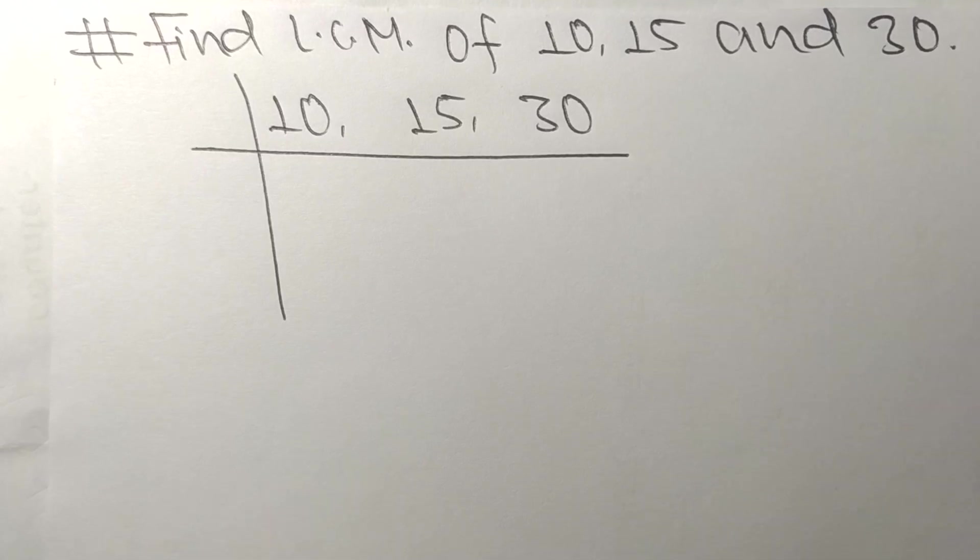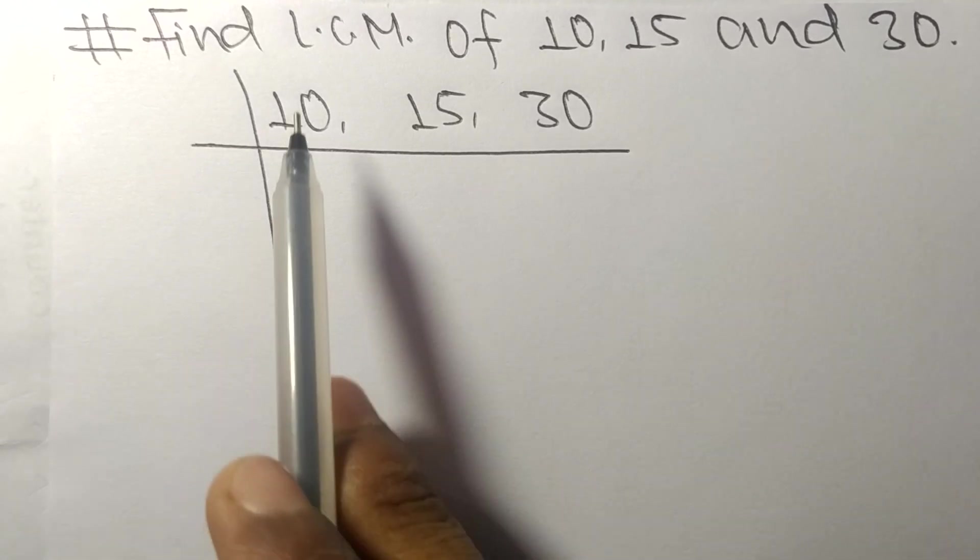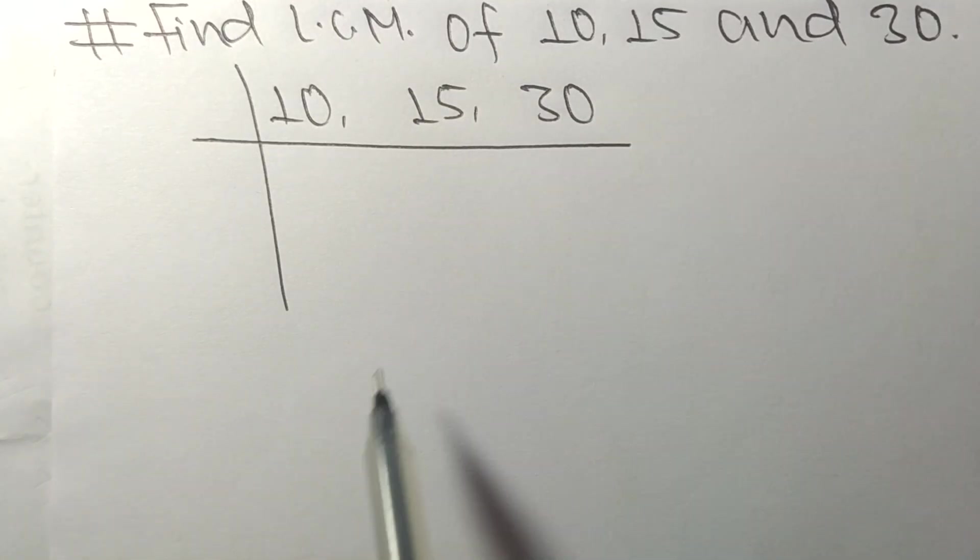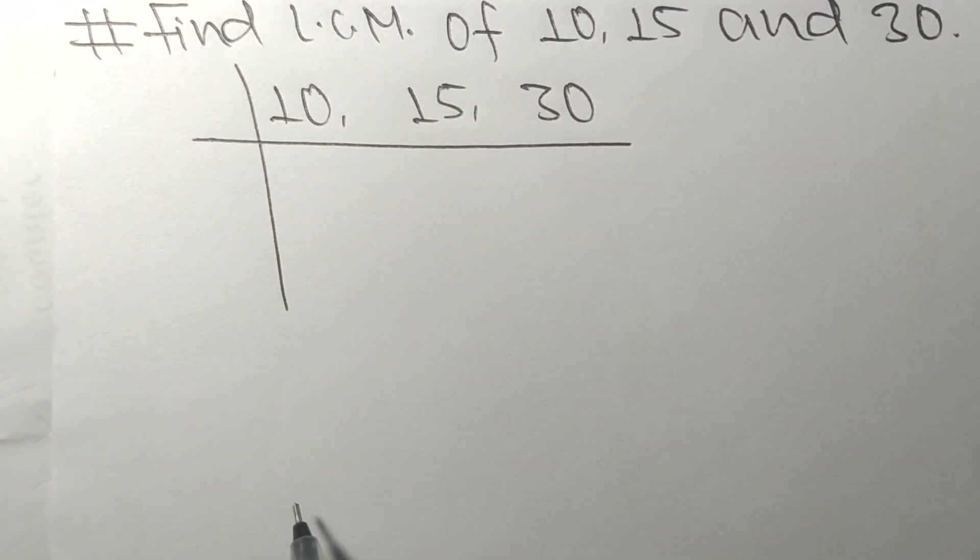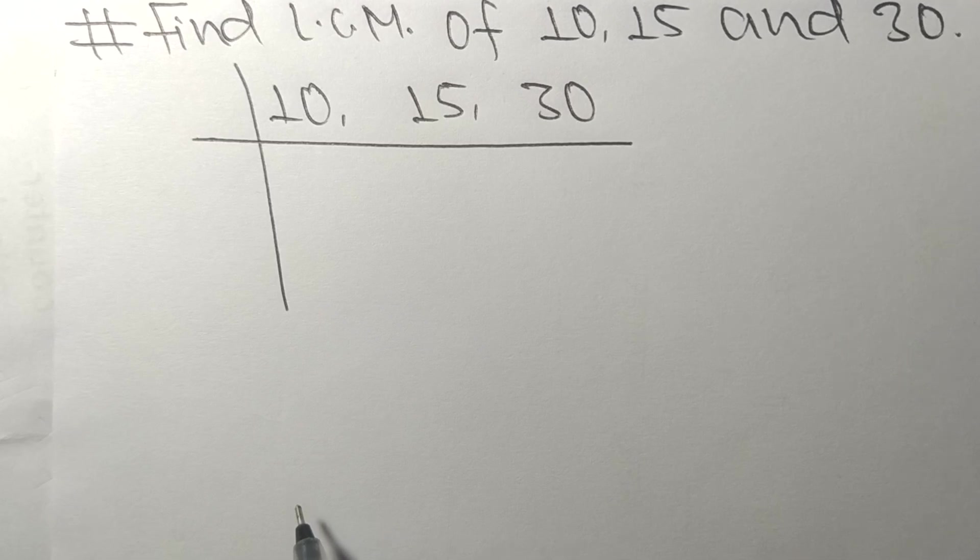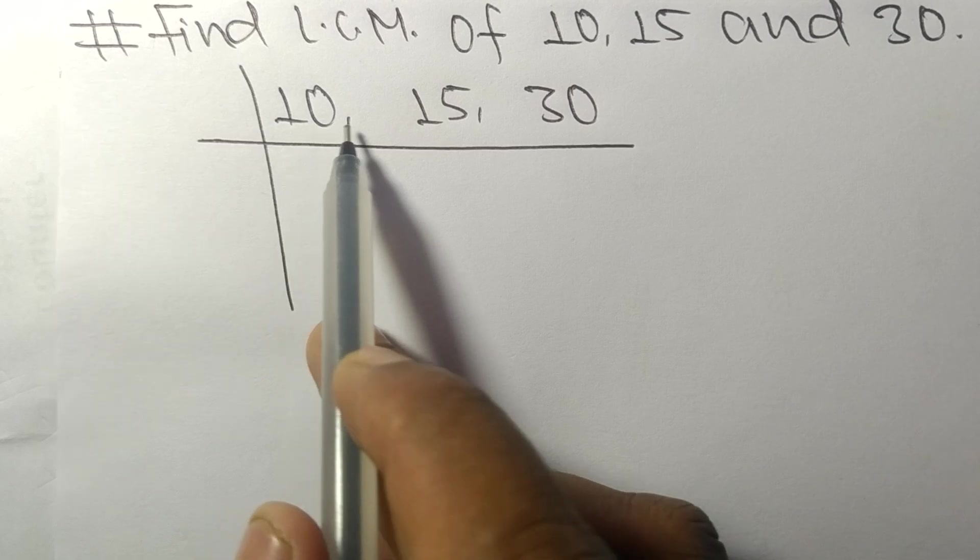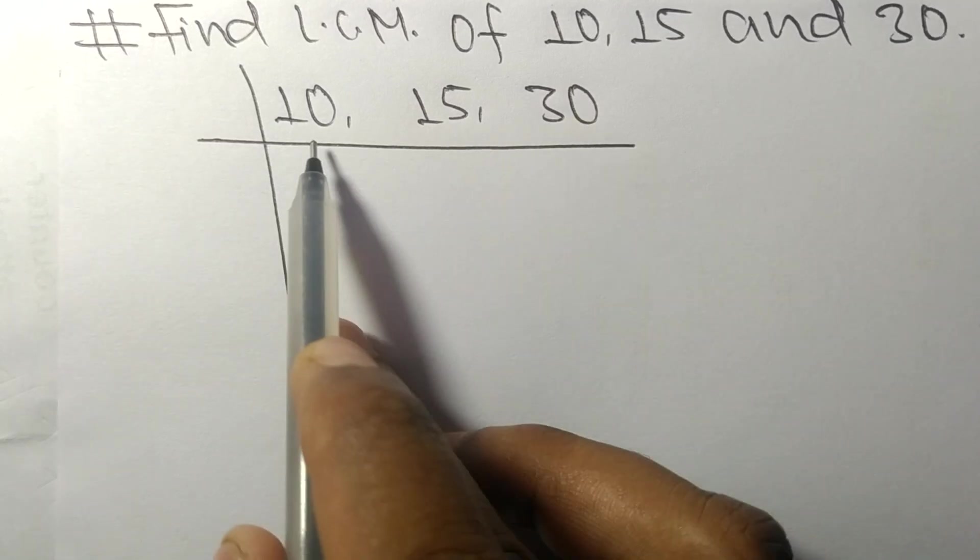Today in this video we shall learn to find the LCM of 10, 15, and 30. To find LCM, we have to choose the lowest number that can exactly divide at least any two of these numbers.